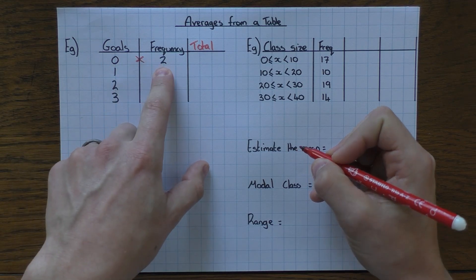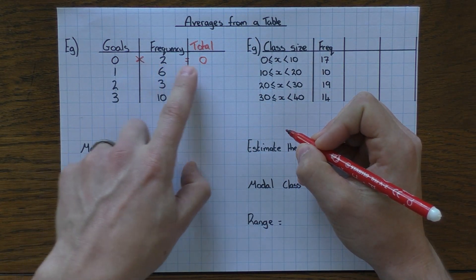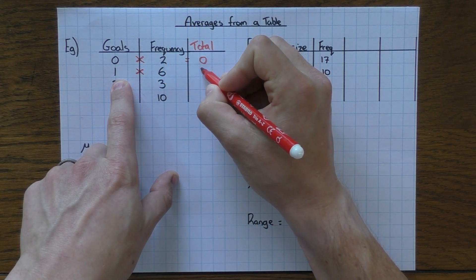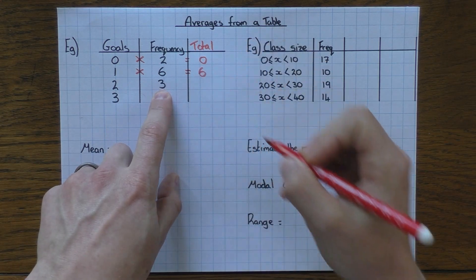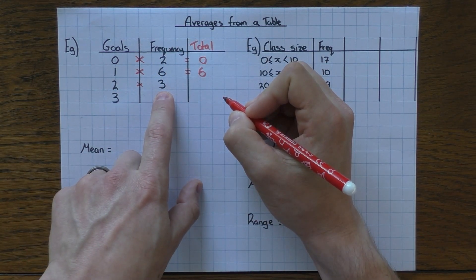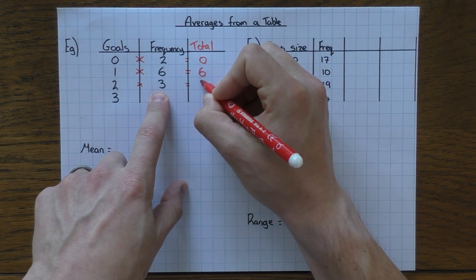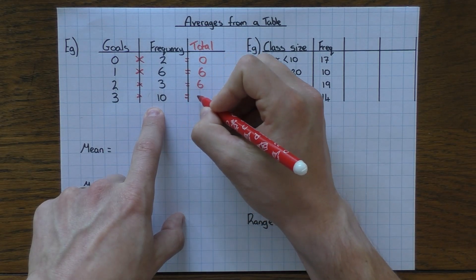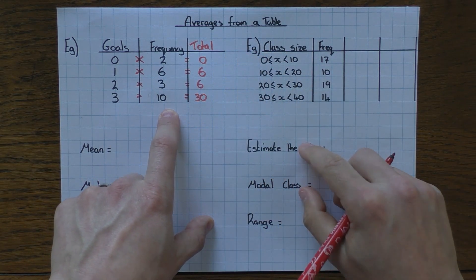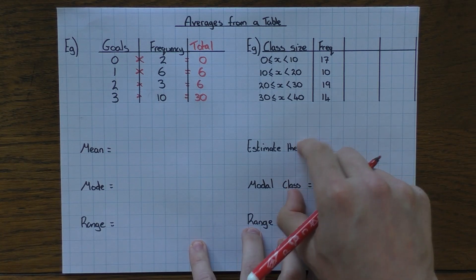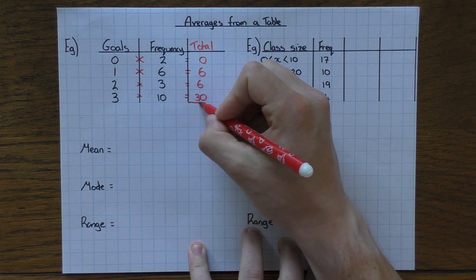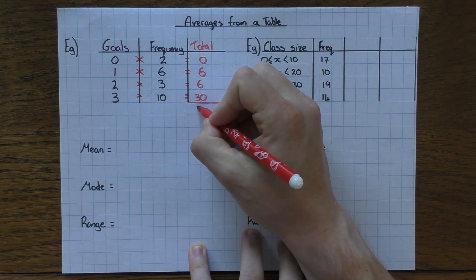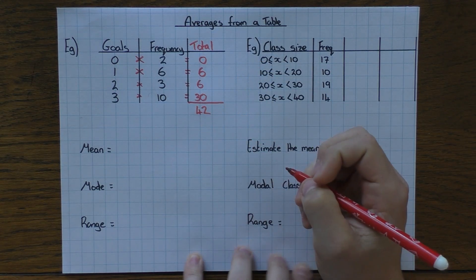I need to work out the total for each row. If I had two matches where I scored no goals, that's zero times two equals zero. Six matches with one goal: one times six is six. Three matches with two goals: two times three is six. And if I had three goals ten times: three times ten is 30. So it's as simple as multiplying value by frequency for each row.